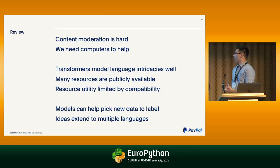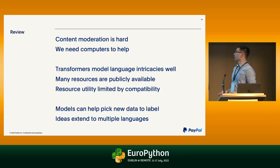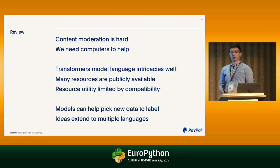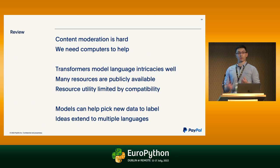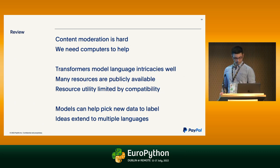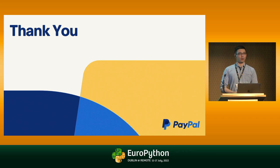Brief recap of everything: content moderation is hard and we definitely need computers to help out. Our first thought goes to transformers because moderation often works with subtleties, and transformers in our experience are the best at handling those. There are a lot of publicly available resources, but they can be limited by compatibility between different training datasets and between pre-training and fine-tuning data. We can use the models we've trained to help pick new training data to label, and these ideas extend to multiple languages as well. That's all I have for today — thanks a lot for listening.